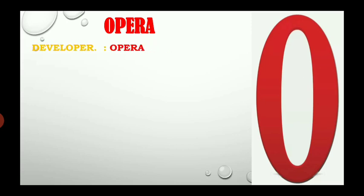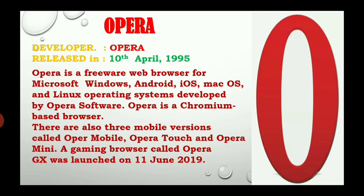Next is Opera. The developer is Opera. It is a Chromium-based browser. There are also three mobile versions: Opera Mobile, Opera Touch, and Opera Mini. A gaming browser called Opera GX was launched on 11th June 2019.